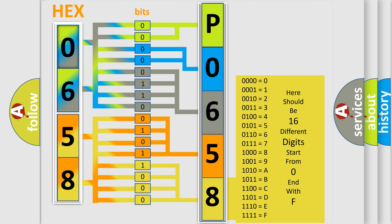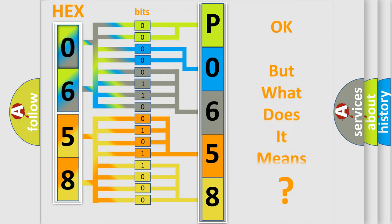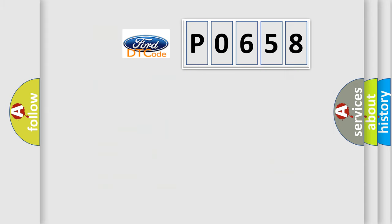We now know in what way the diagnostic tool translates the received information into a more comprehensible format. The number itself does not make sense to us if we cannot assign information about what it actually expresses. So, what does the Diagnostic Trouble Code P0658 interpret specifically for Infiniti car manufacturers?